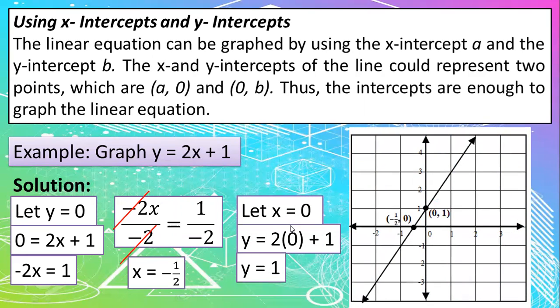again, all we need to do now is to graph it or to point it out on our Cartesian coordinate plane. So our first point is negative 1 half and 0.